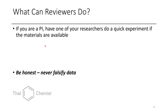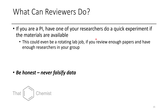What can you do? If you're a principal investigator or reviewer, you can get researchers to do a quick experiment if it's easy to test the chemistry. Yes, it's a lot to ask, but I think this is the only way science moves forward — by verifying, because people will cheat. This could even be a rotating lab job, and if you review enough papers, it could make sense as a regular practice. You'd be doing a huge service to the scientific community.